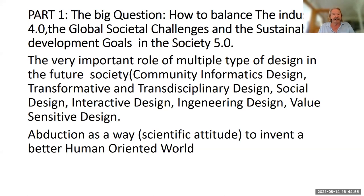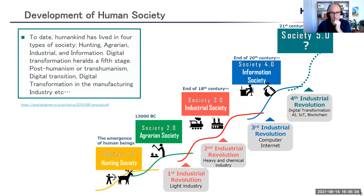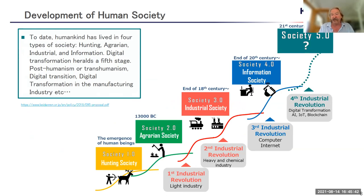It is important to have maybe an 18th global sustainable goal around communication and fake news, because we're talking between different countries in the manufacturing industry and we have to co-create together. That co-creation is by abduction — the complement of deduction and induction in science — as a way to invent a better human-oriented world. Society 5.0: humankind has lived in four types of society — hunting, agrarian, industrial, and information — and digital transformation is around the fifth stage.